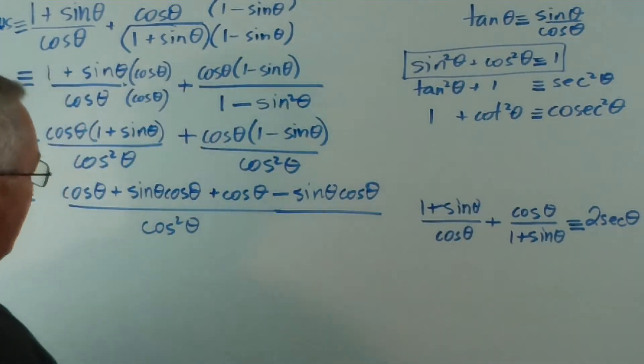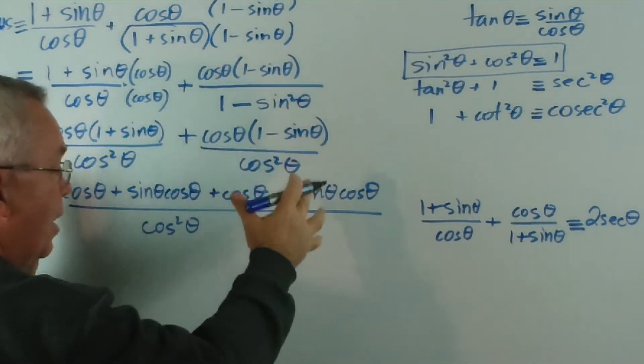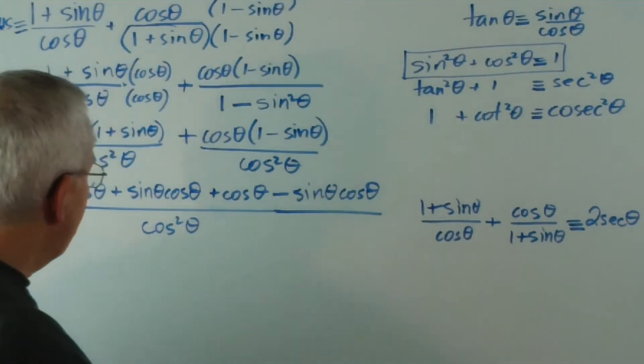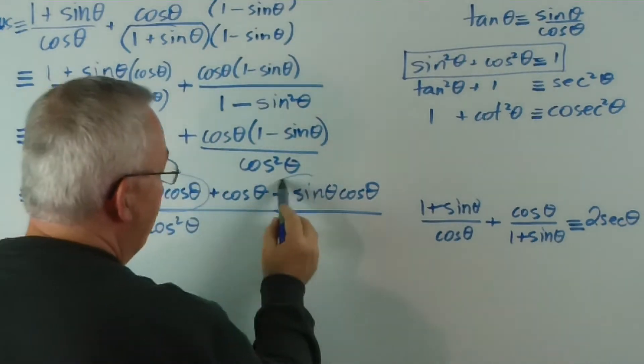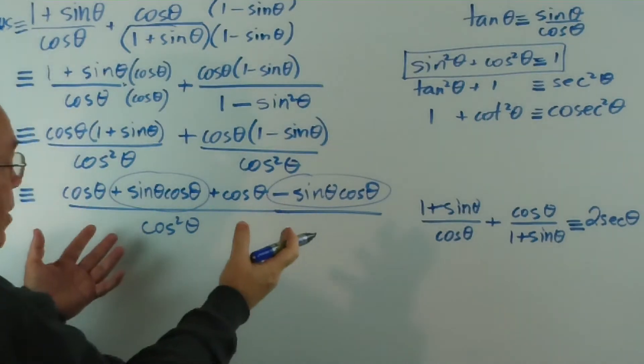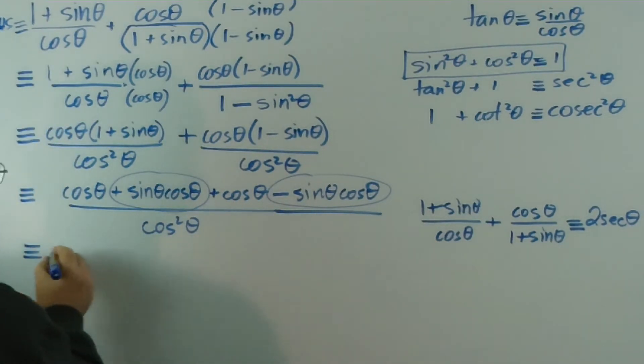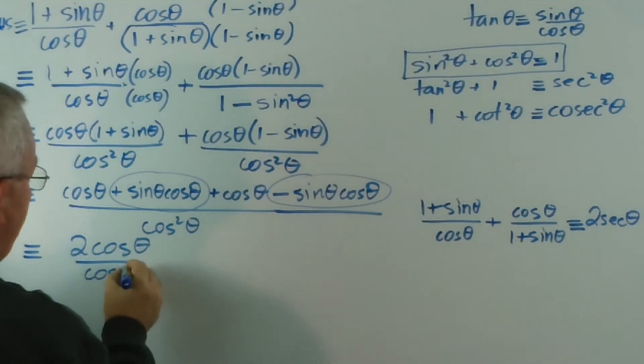Things get worse before they get better sometimes. That's a very large fraction, but it is one thing. And we're after one thing. So believe it or not, we've actually improved the matter. Look at the top. We actually have two terms that are exact opposites. So they add to zero. And they leave cos theta plus cos theta is 2 cos theta over our cos squared theta.